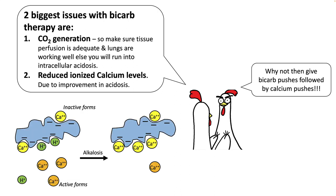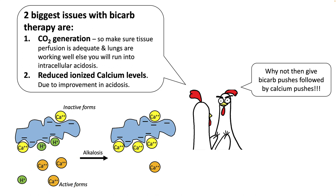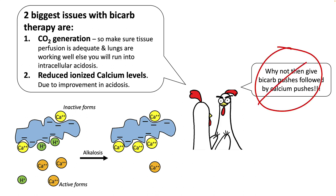The second problem with bicarb therapy is reduced ionized calcium levels. Calcium is bound to albumin, and in acidosis this binding is replaced by hydrogen ions, so there is a lot of free ionized calcium in serum, which is the active form. As your acidosis corrects, the hydrogen ions are replaced by calcium ions, so your ionized calcium decreases and can result in hypocalcemia. Some practitioners give bicarb pushes followed by calcium pushes, and we'll discuss the physiology and complications of this method in a separate lecture.